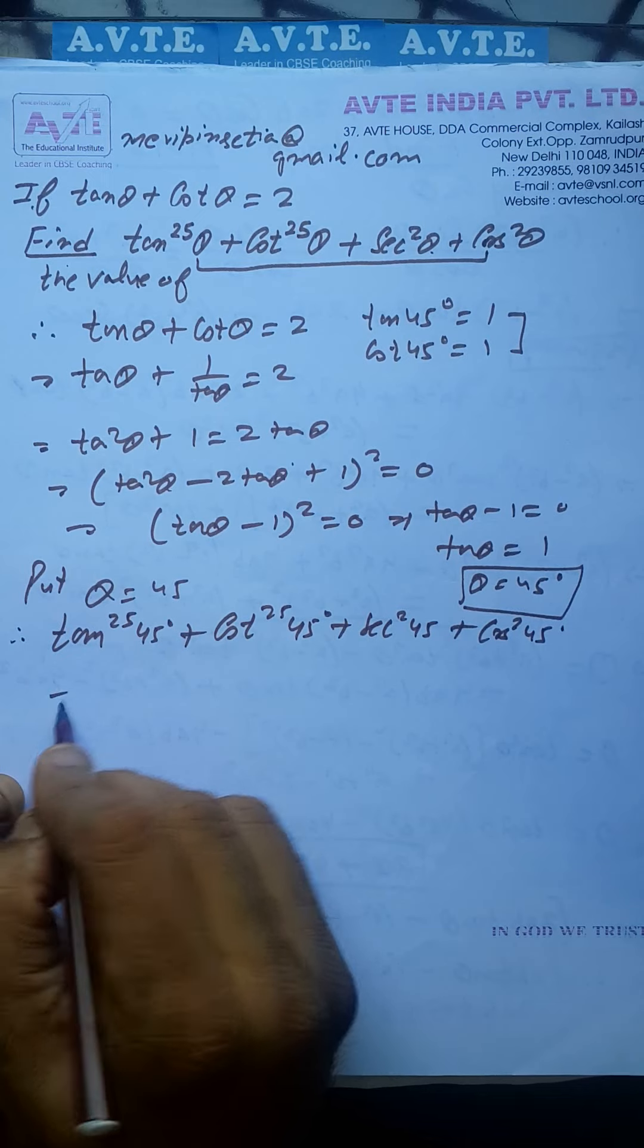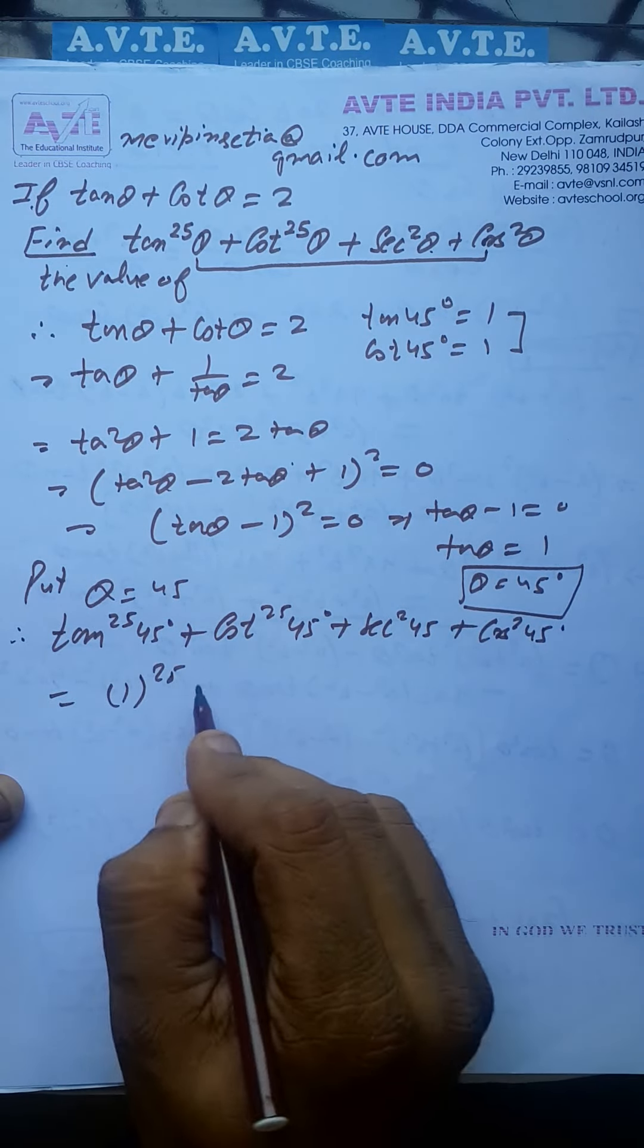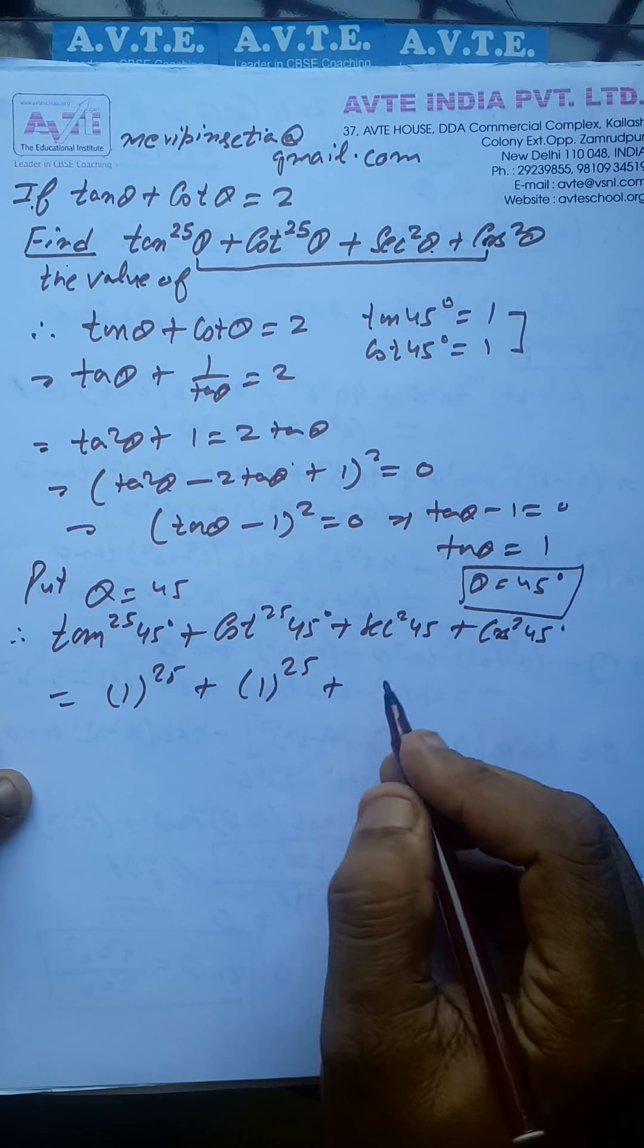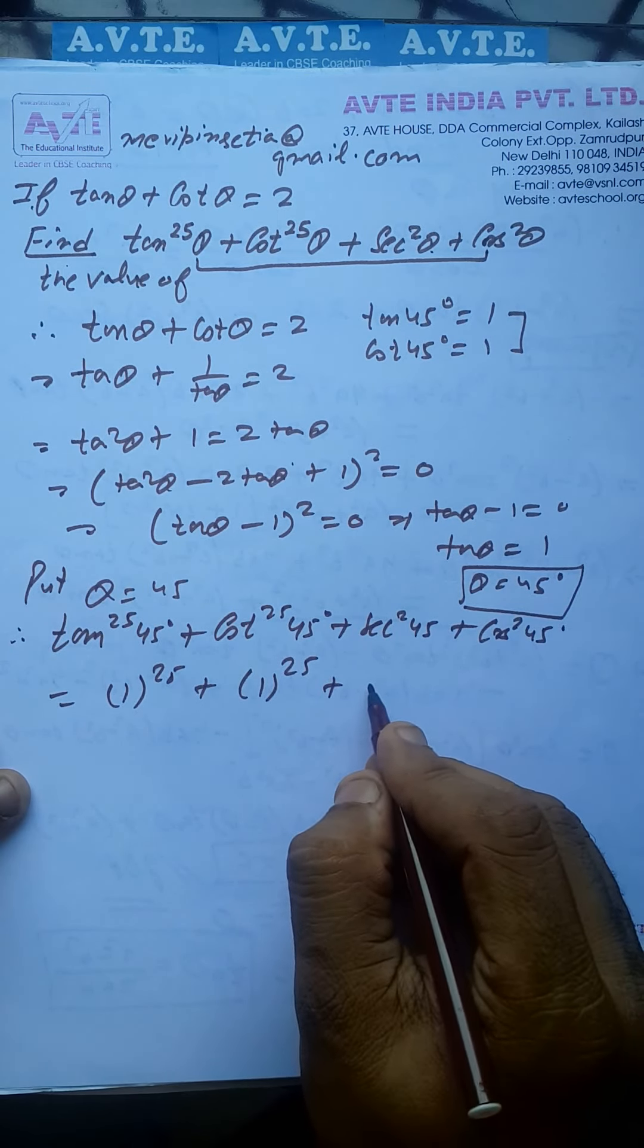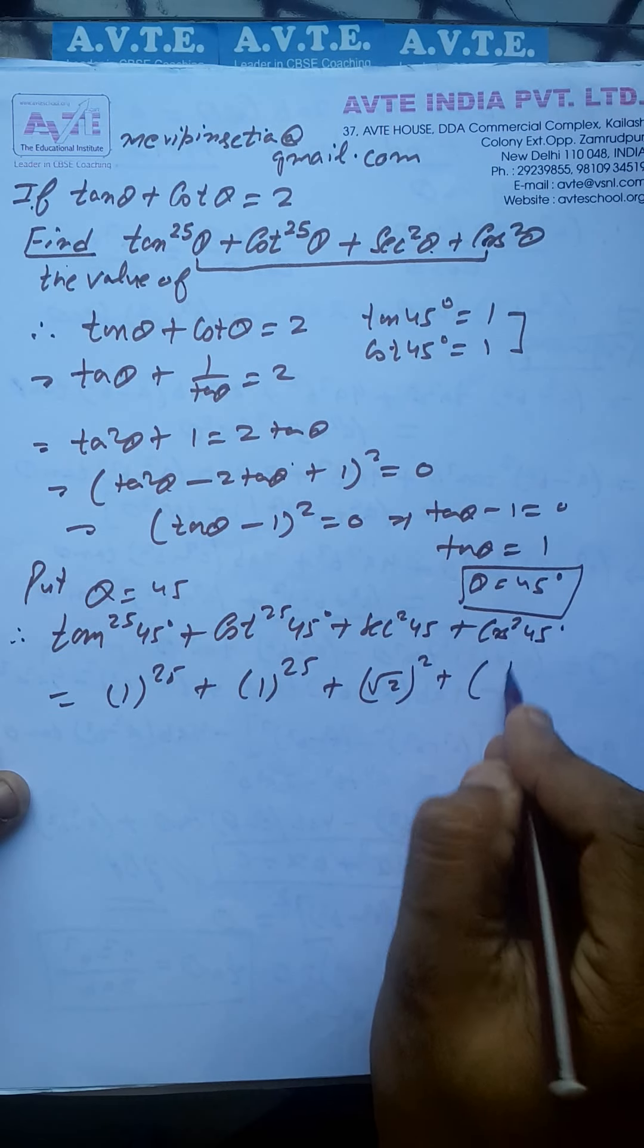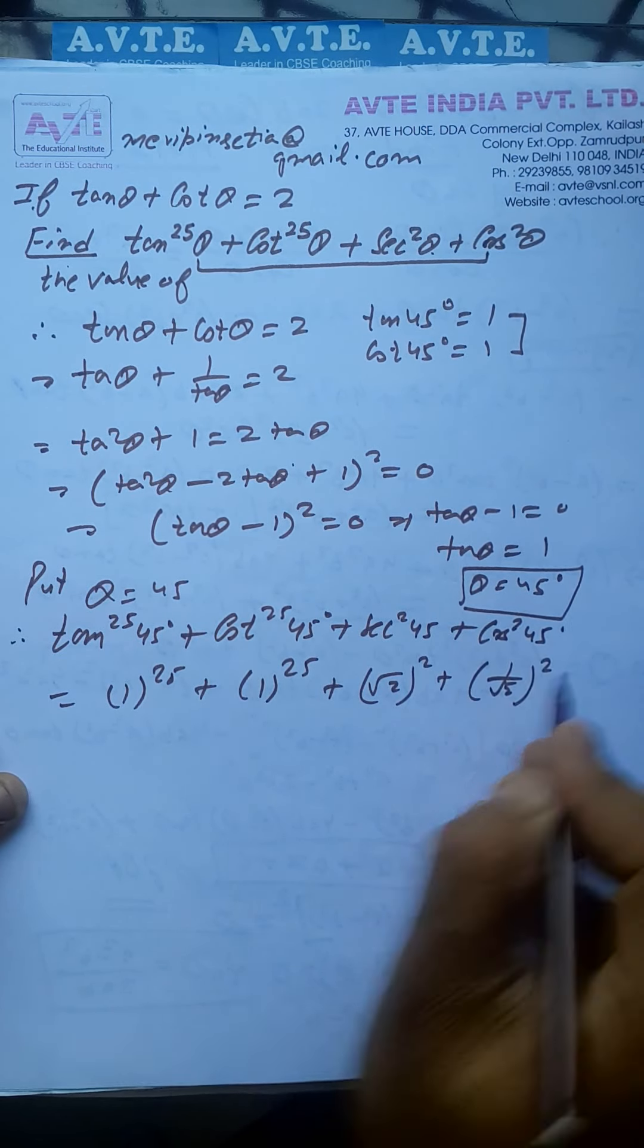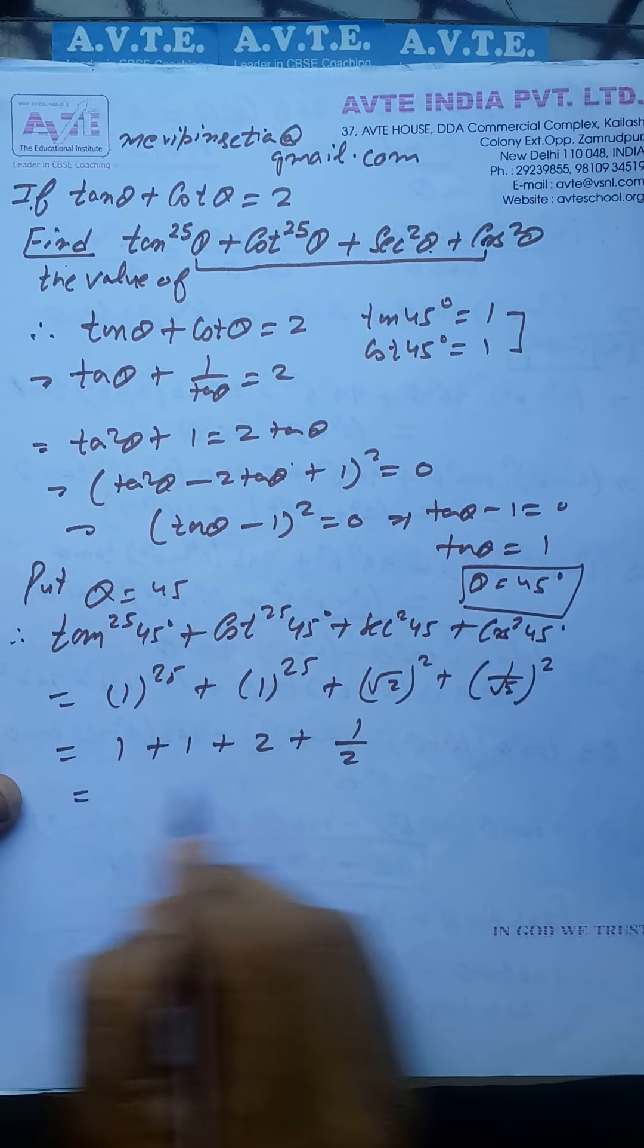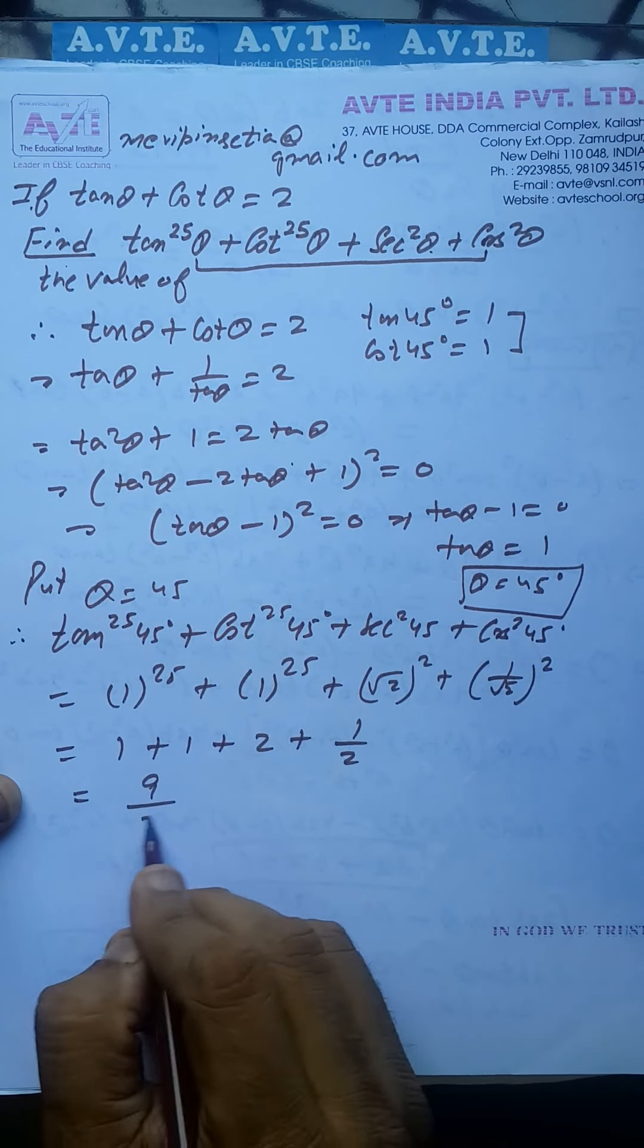So this is 1^25 plus 1^25. Secant 45 is root 2 raised to power 2, and cos 45 is 1/root 2. So this is 1 plus 1 plus 2 plus 1/2. This is 4 plus 1/2 equals 9/2.